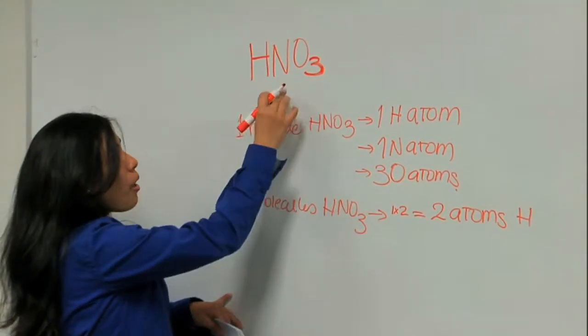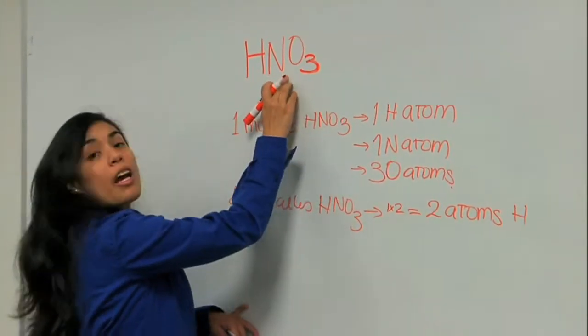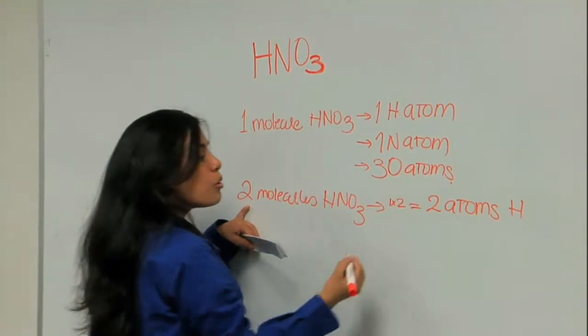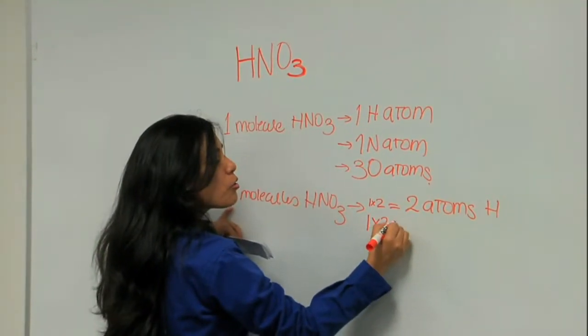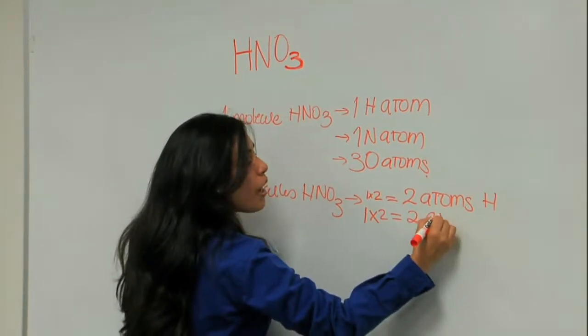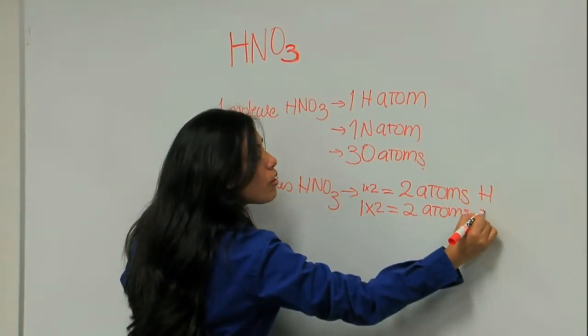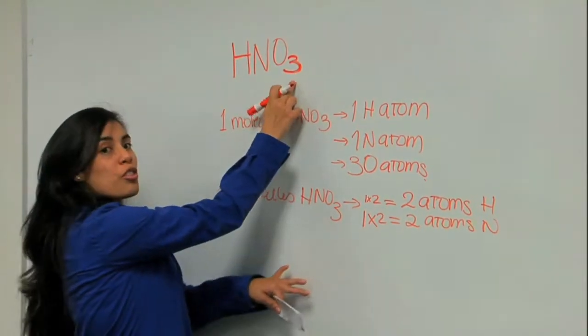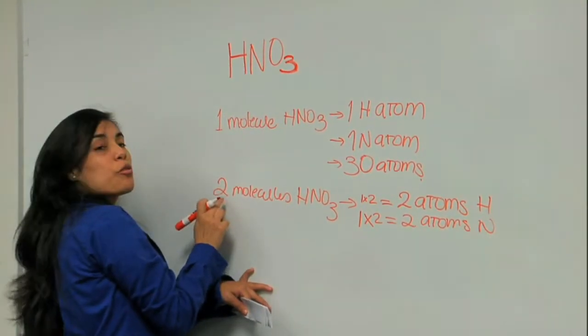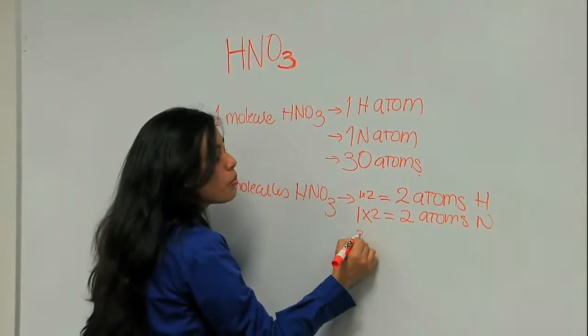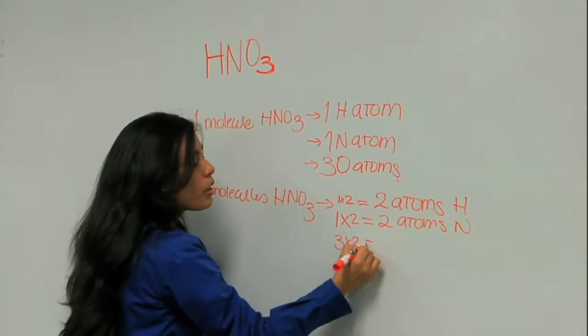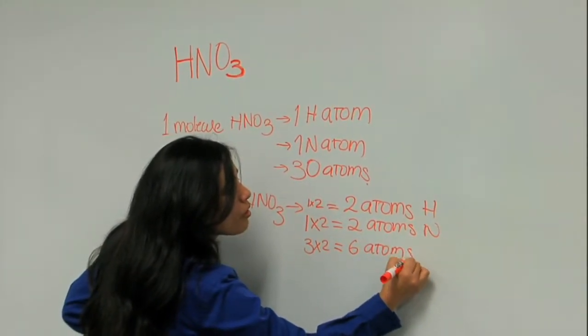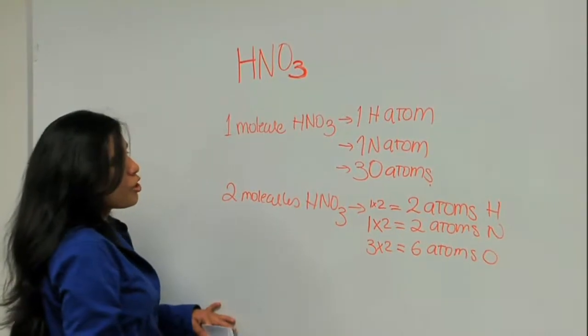What about nitrogen? Nitrogen has a subscript of one. That has to get multiplied by two. One times two means that I have two atoms of nitrogen. What about oxygen? Oxygen is three. I have to multiply three times two, which is six. So I have six atoms of oxygen.